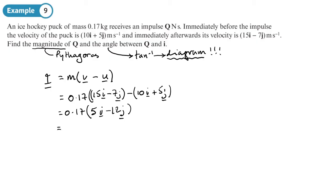Let's times those by 0.17 to work out what the impulse vector is. So 0.17 times 5 gives me 17 over 20, which is 0.85i. And 0.17 times 12 gives us minus 2.04j. So there's i as a vector.